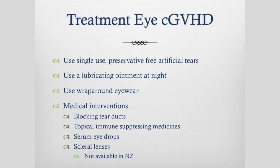Use wrap-around eyewear to keep wind and dust out of your eyes and help keep moisture in. Medical interventions include the ophthalmologist blocking your tear ducts to prevent drainage and keep moisture in your eyes, topical immune-suppressing medicines, and serum eye drops which the New Zealand Blood Service can make for you. There are also scleral lenses available in the US, which have a fluid reservoir to help keep your eyes moist, but that option is not really available here.